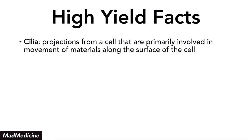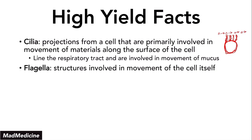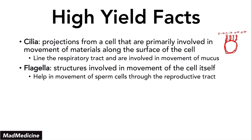Cilia are projections from the cell primarily involved in the movement of material along the surface of the cell. You see these in the respiratory tract — they line it and are involved in the movement of mucus. You don't want dust going deep into your lungs causing inflammation or pneumonia, so cilia take the mucus that traps the dust and move it back out toward your mouth. Flagella are structures involved in the movement of the cell itself and are one component of sperm cells, helping with the movement of sperm cells in the reproductive tract.